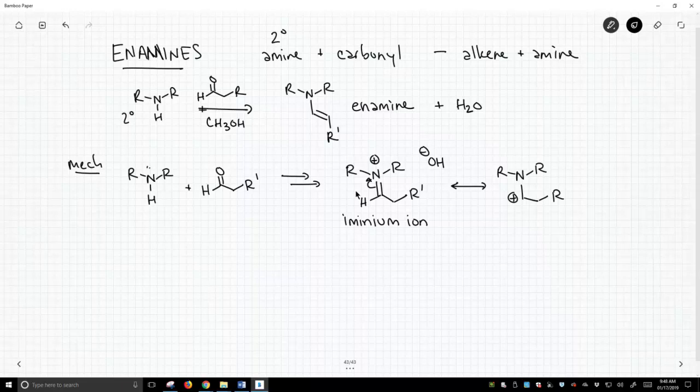Well, we have a lot more experience with carbocations. Carbocations have two fates. They either get attacked or they lose a beta hydrogen. So here's our carbocation carbon. We have two hydrogens that are beta to that carbon. And so our hydroxide or our solvent methanol can come in and pluck off one of those hydrogens.